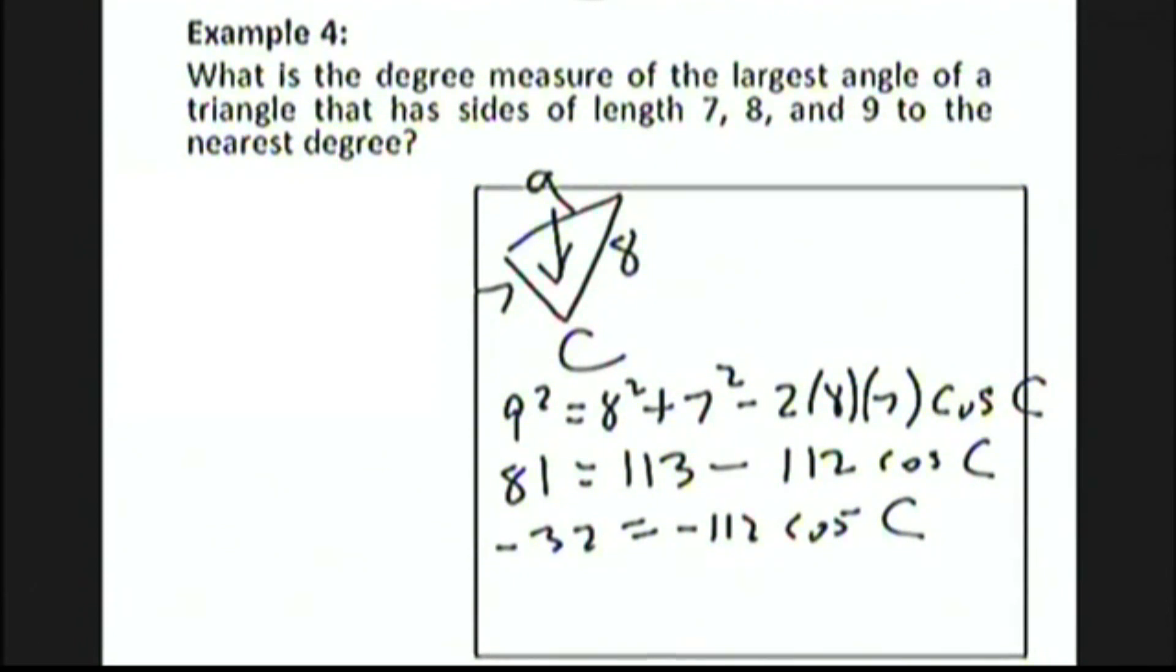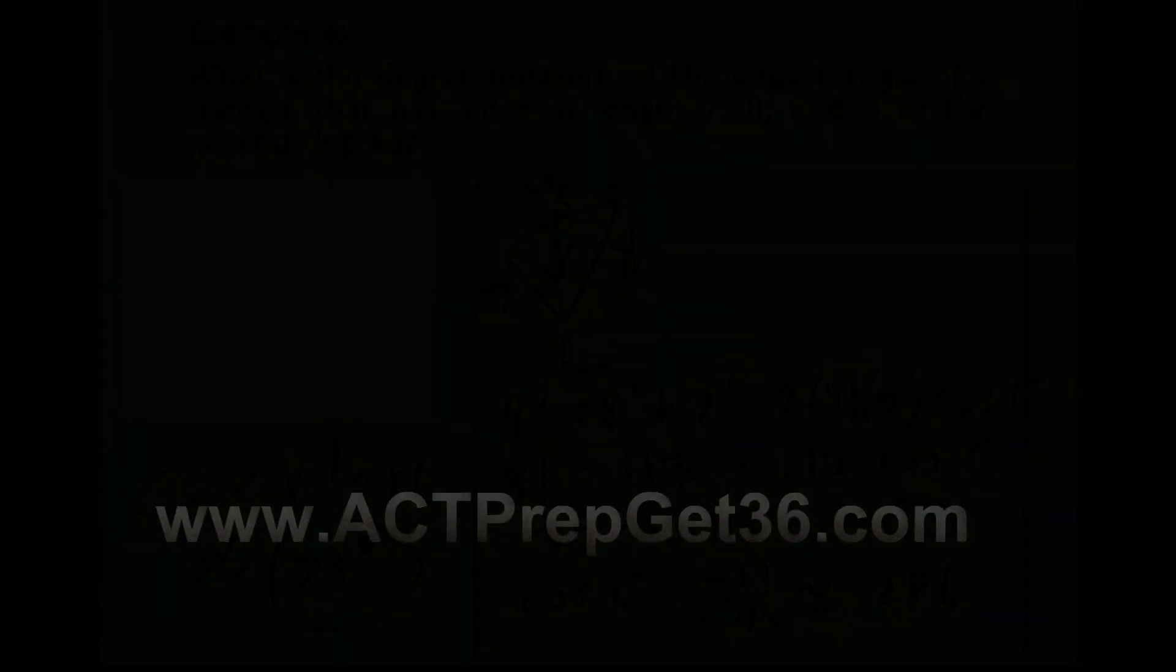We now divide each side by -112 to get cos C = -32/-112, which comes out to approximately 0.286. Finally, we need to get C by itself, and we do that by taking the inverse cosine of 0.286. We can do that in our calculator by hitting second followed by the cosine button. To the nearest integer, that comes out to 73 degrees.